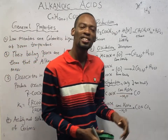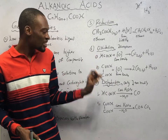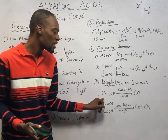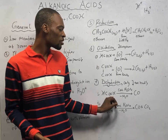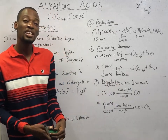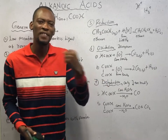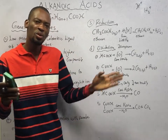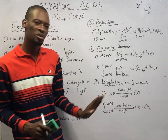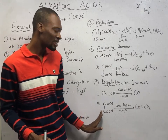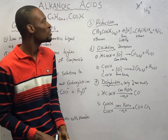Dehydration: alkanoic acids are not readily dehydrated. Only methanoic acid and ethanedioic acid will readily dehydrate. In the presence of concentrated H₂SO₄ as a dehydrating agent, dehydrating methanoic acid forms carbon monoxide, and dehydrating ethanedioic acid also forms carbon monoxide and CO₂.